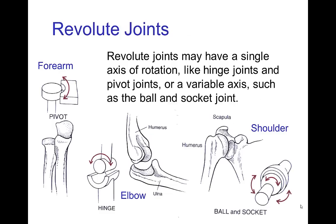Revolute joints come in a variety depending on the axis of rotation. You could have something like the forearm, which is a pivot joint, the elbow which is a hinge, or something with a variable axis such as the ball and socket joint in the shoulder.